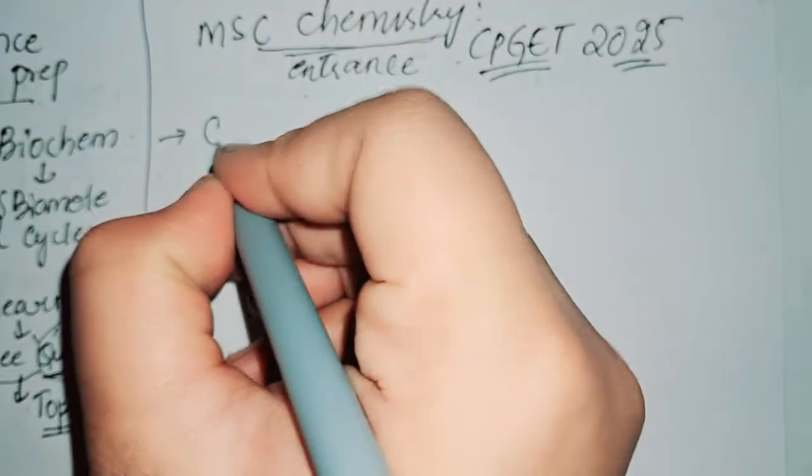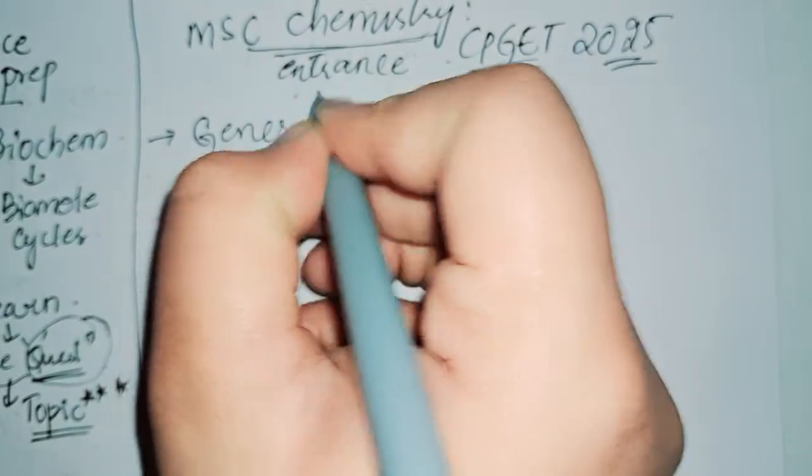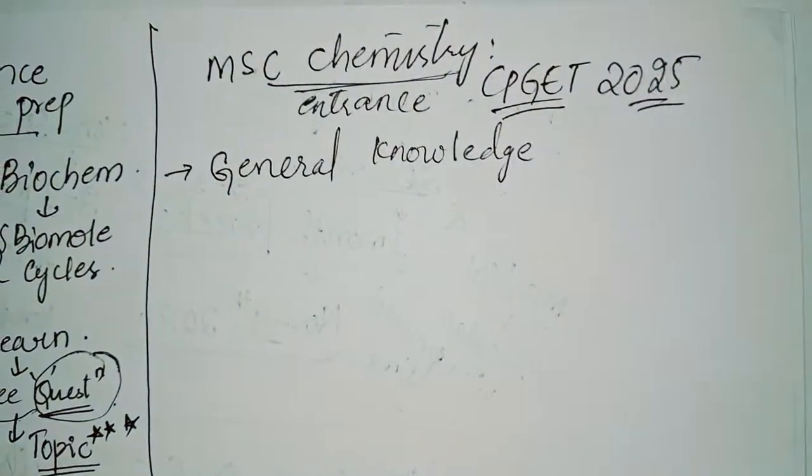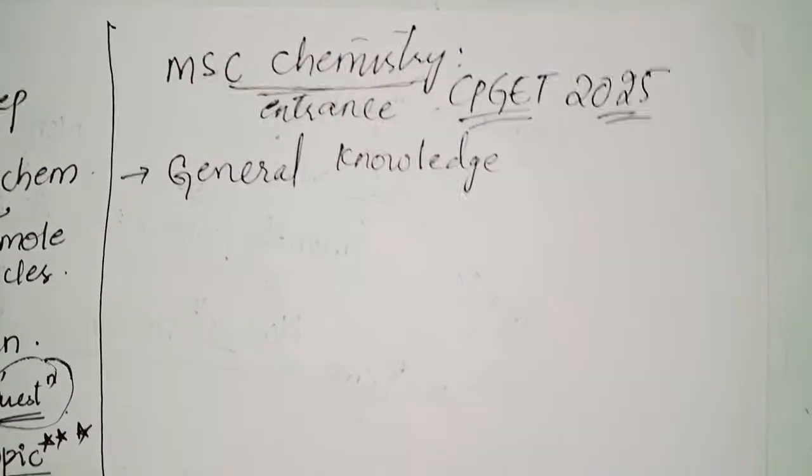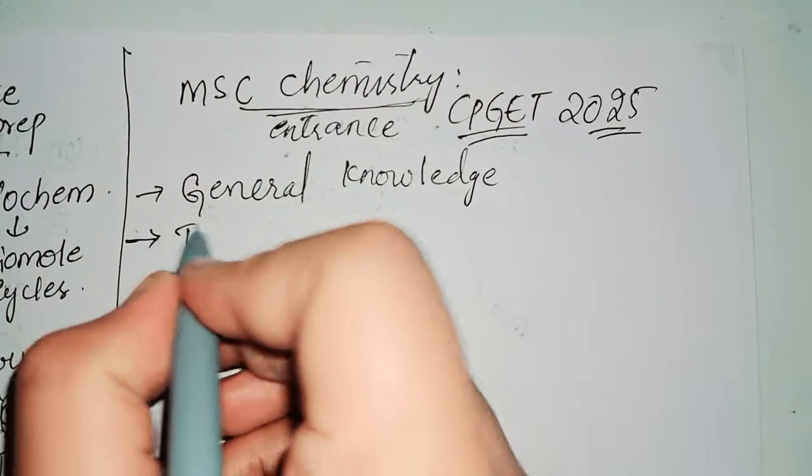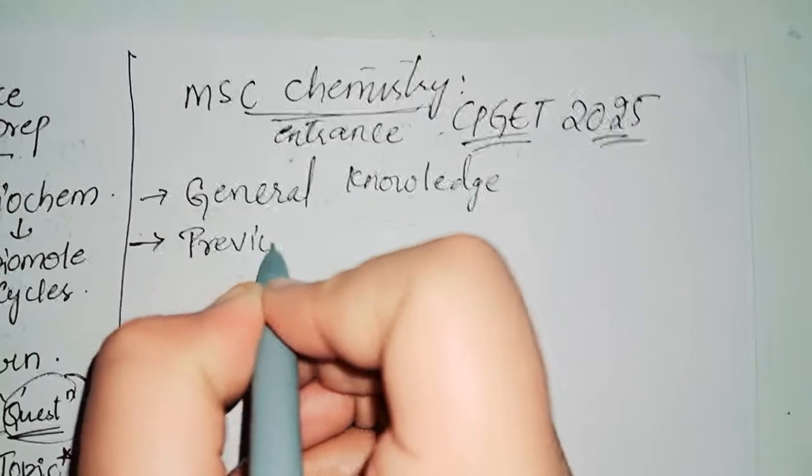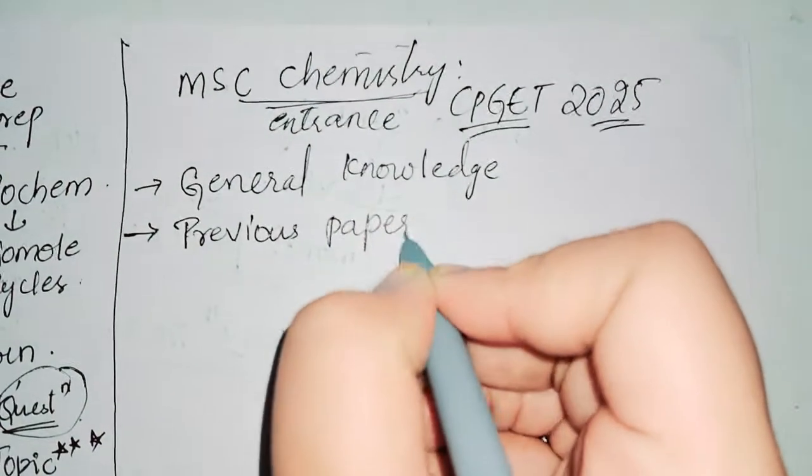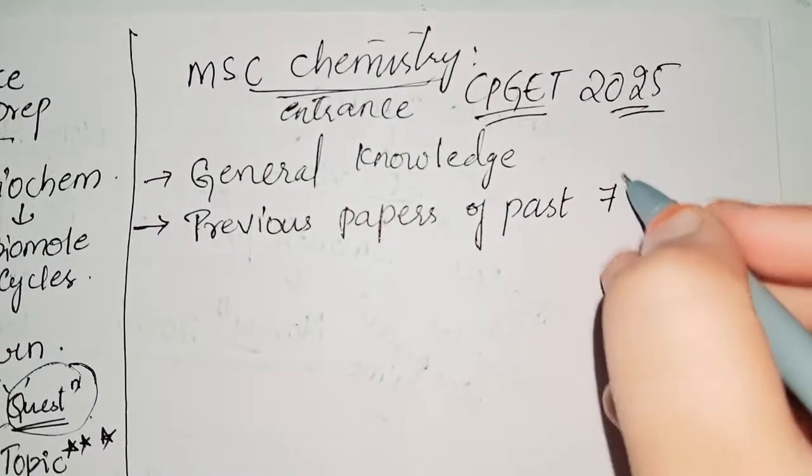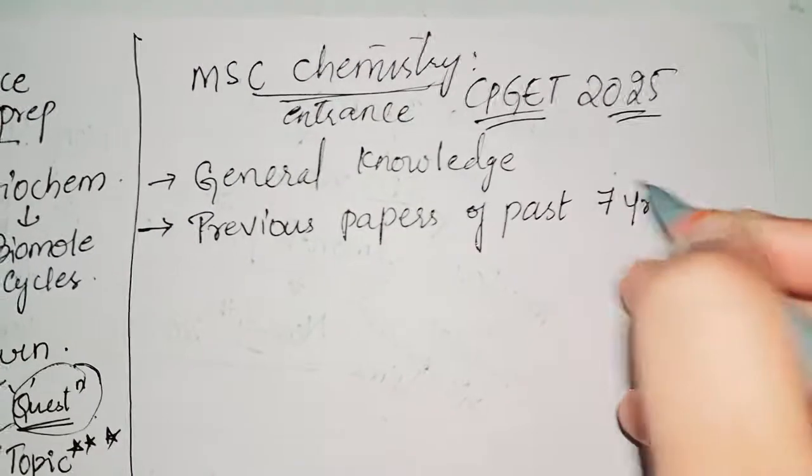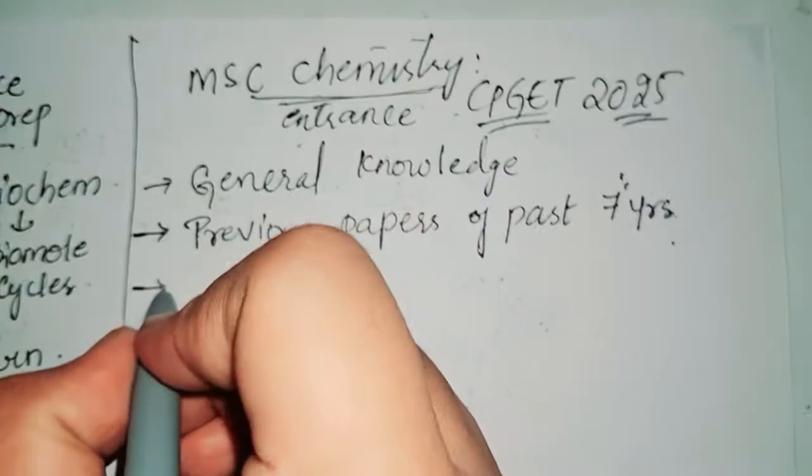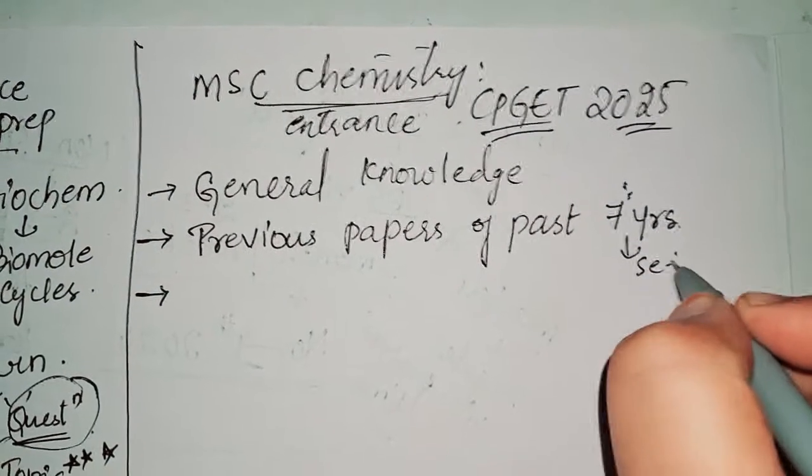The first and foremost thing is general knowledge. You need about the chemistry a little bit of general knowledge, whatever you know about it, that is much better. And the second thing is previous papers of past seven years, okay, past seven years previous papers you need. And then what you need to do, you need to see the questions from those papers.